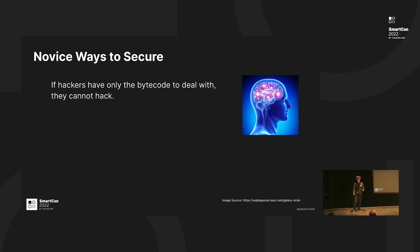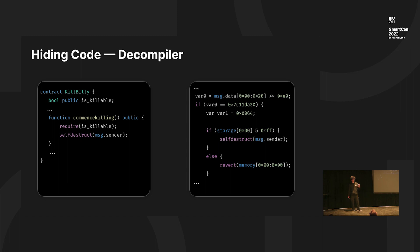One of the novice ways people try to secure smart contracts is thinking they cannot be hacked if the source code is not available anywhere. But there are lots of cases where hacks happen by solely using bytecode. That's because decompilers are extremely good. This is an example of the output of the decompiler on the right side, and the left side is the program to which the decompiler's output corresponds.